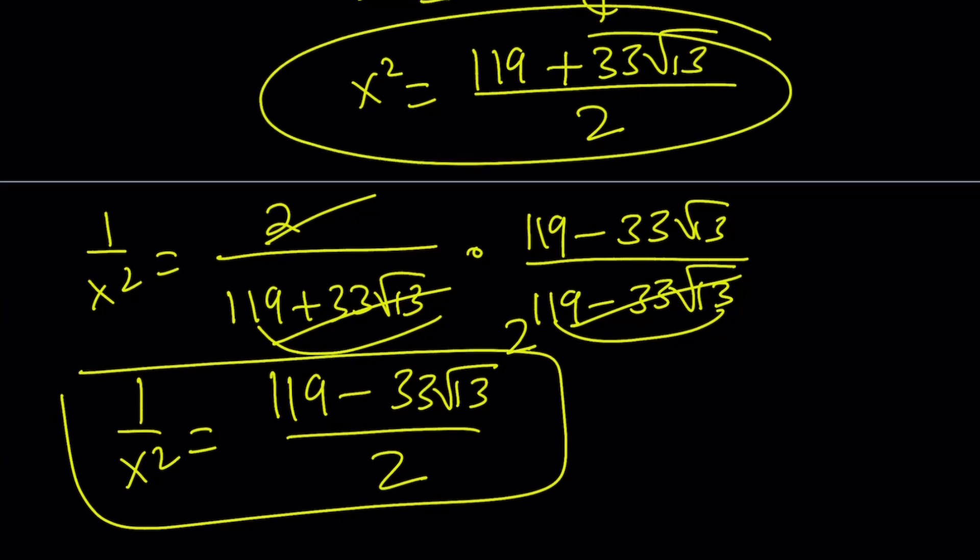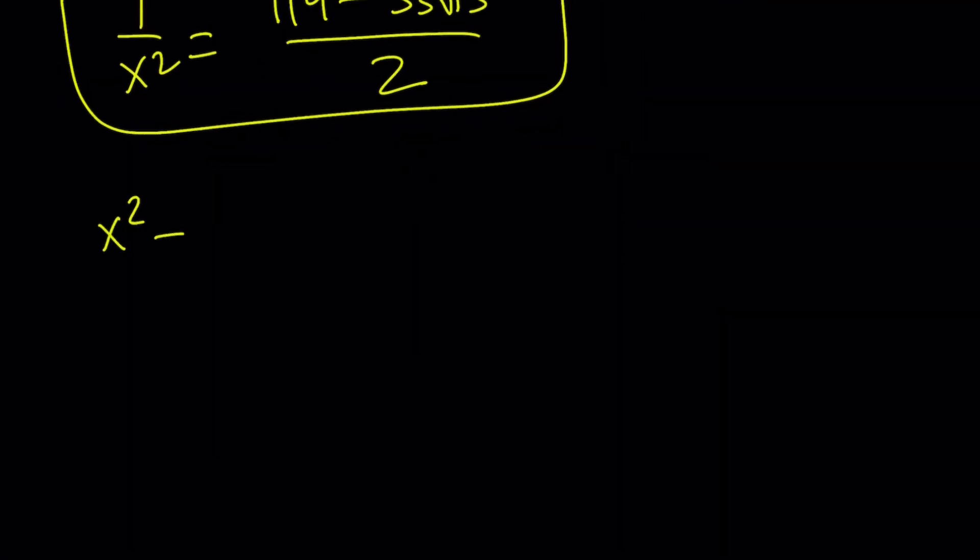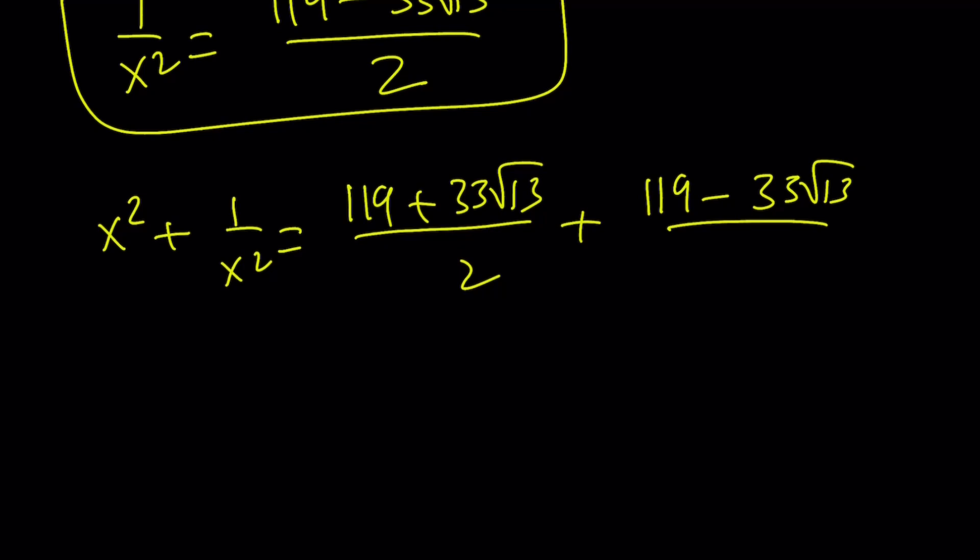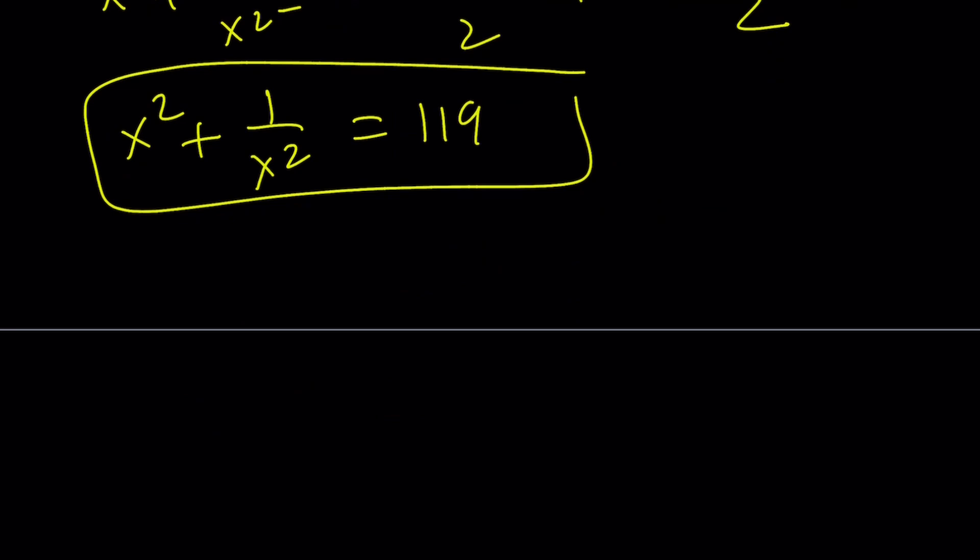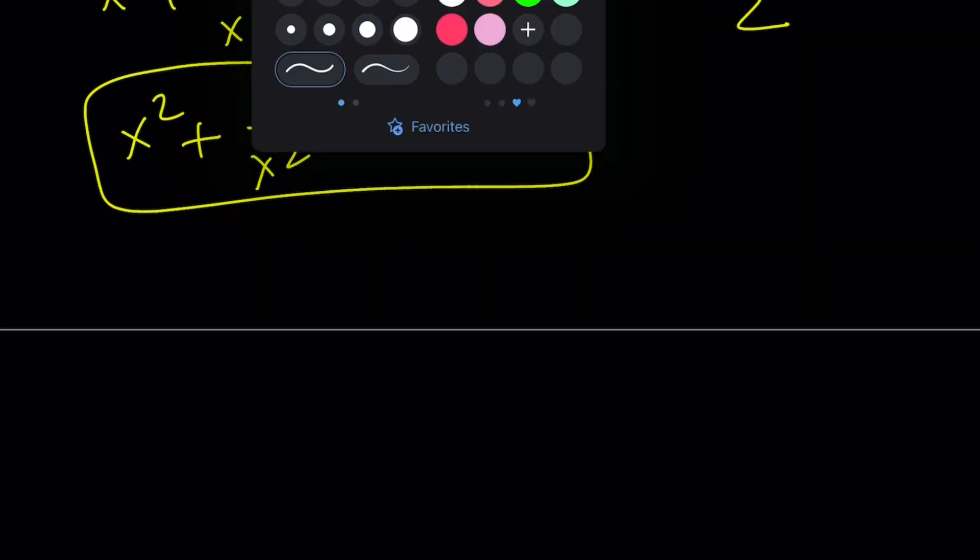That's my x squared, and I'm going to add those together. x squared plus 1 over x squared. I'm just going to add 119 plus 33 root 13 over 2 plus 119 minus 33 root 13 over 2. And when I add these up, 33 root 13 is going to cancel out. I'm going to add 119 plus 119, which is 2 times 119, divided by 2 is just going to be 119. And that's going to be our answer. And this brings us to the end of the first method. Let's go ahead and talk about the second method now.